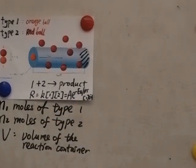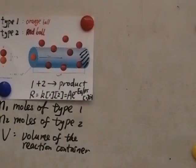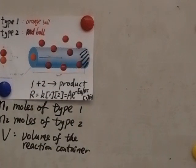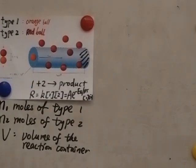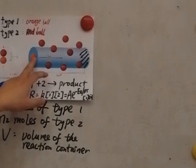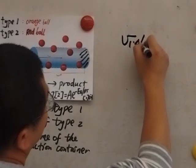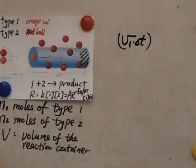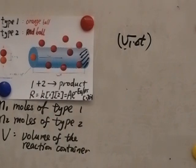We're going to look at the collision between just one molecule of type 1 and all other type 2 molecules. Let's assume this orange bar is a type 1 molecule and we assume this sphere is moving straight at speed v₁. Within time Δt, this orange sphere can move a distance of v₁ times Δt. That's the distance this orange sphere travels within time period Δt. This v₁ is the speed of this molecule.